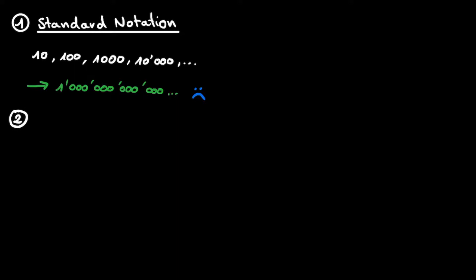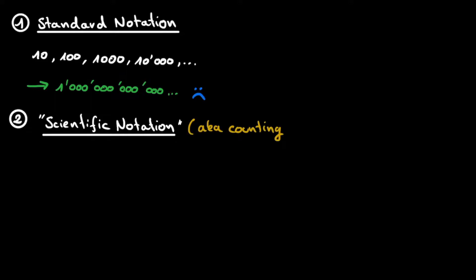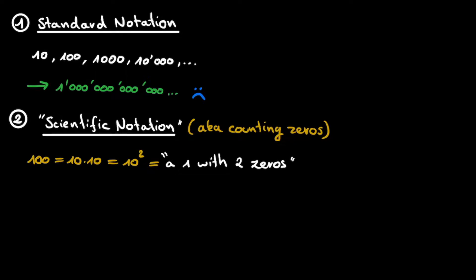To overcome this obstacle, we move to scientific notation, which is basically counting zeros. Because we know that for each zero added to a number, we basically multiply by 10. So instead of writing out all of these zeros, why don't we simply count them and put them in the exponent of 10. As an example, 100 is simply 10 times 10, equal to 10 to the power of 2 — meaning a 1 with 2 zeros. 1 million has 6 zeros, so it simply becomes 10 to the power of 6. And a number with 15 zeros simply becomes 10 to the power of 15.